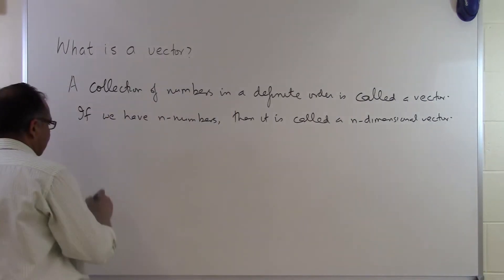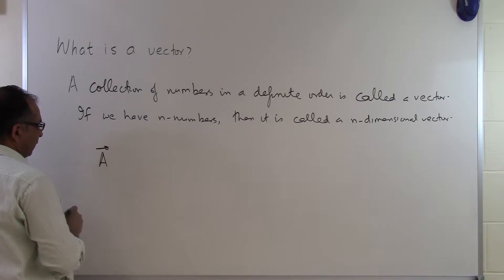Let's look at an example in terms of symbols. Suppose we have a vector a, and what we are noting it by is an arrow on the top.